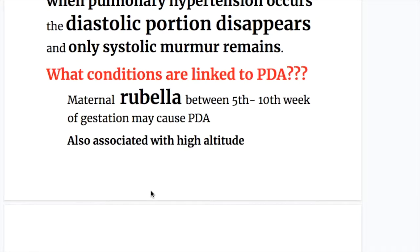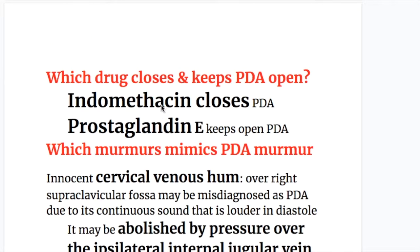Maternal rubella between the fifth and tenth week of gestation may cause patent ductus arteriosus, and PDA is also associated with high altitude. Indomethacin closes the patent ductus arteriosus, while prostaglandin E keeps it open.